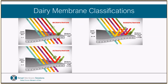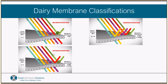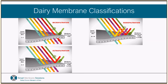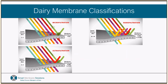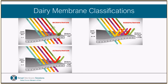Nanofiltration has a smaller pore structure again than UF and can also reject multivalent ions such as calcium and magnesium, whilst having much lower rejection of the monovalent ions such as sodium chloride. NF is often used for desalting or partially demineralising some dairy streams, as well as for purification and colour removal of recovered alkali chemical streams for chemical reuse.